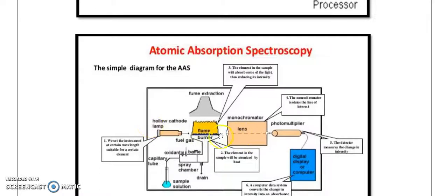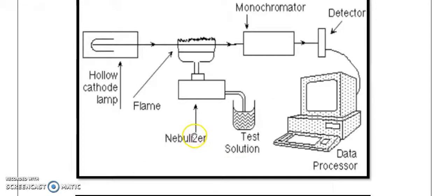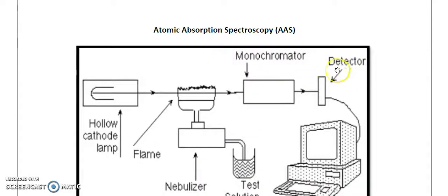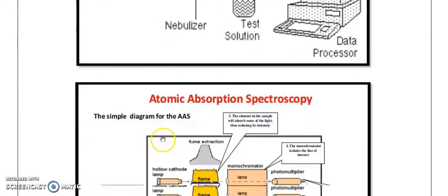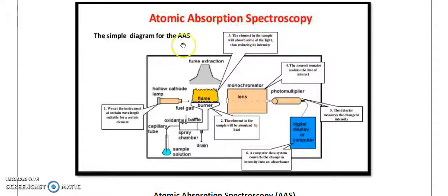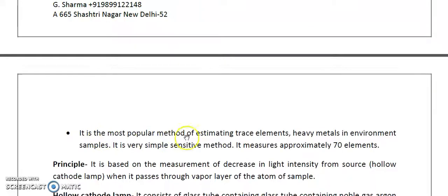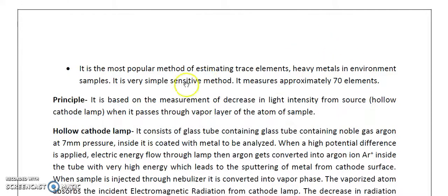In the AAS setup we have a fuel-air mixture, an atomizer/nebulizer used for injecting samples, a monochromator, and a detector. Flame AAS is the most popular method for estimating trace elements and heavy metals in environmental samples. It is a very simple and sensitive method that can measure approximately 70 elements. The principle is based on the measurement of the decrease in light intensity from the holocathode lamp when it passes through the vapor layer of atoms of the sample.